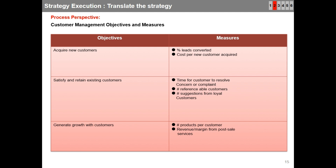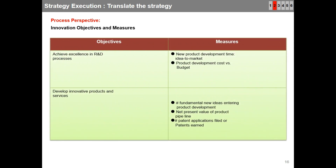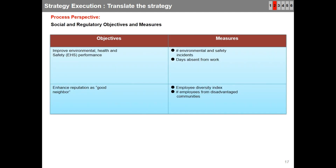For innovation objectives and measures, you can see two objectives: achieve excellence in research and development processes, and develop innovative products and services. For social and regulatory objectives, you can see two objectives: improve environmental, health, and safety (EHS) performance, and enhance reputation as a good neighbor. Each objective has corresponding measures on the right side.